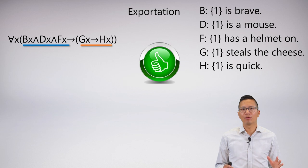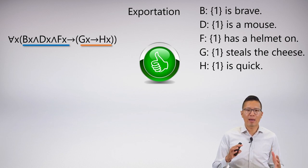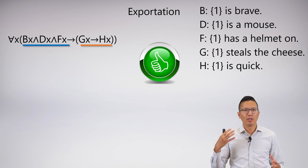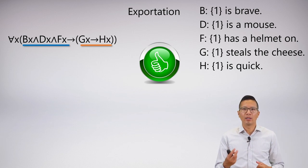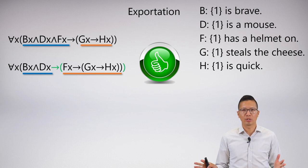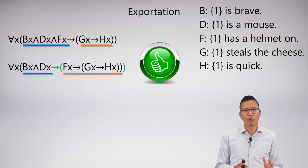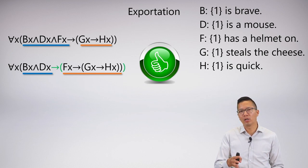Here is a very important type of logically equivalent solution worth going over: exportation. We've seen exportation already in sentential logic, but it actually matters a little bit more in predicate logic because certain exported forms might seem more natural. Here's the symbolization we arrived at, with the group highlighted and the property highlighted. But you could have conceived this differently — symbolizing it as: for anything, if you're brave and a mouse, then if you have a helmet on, you also steal the cheese.